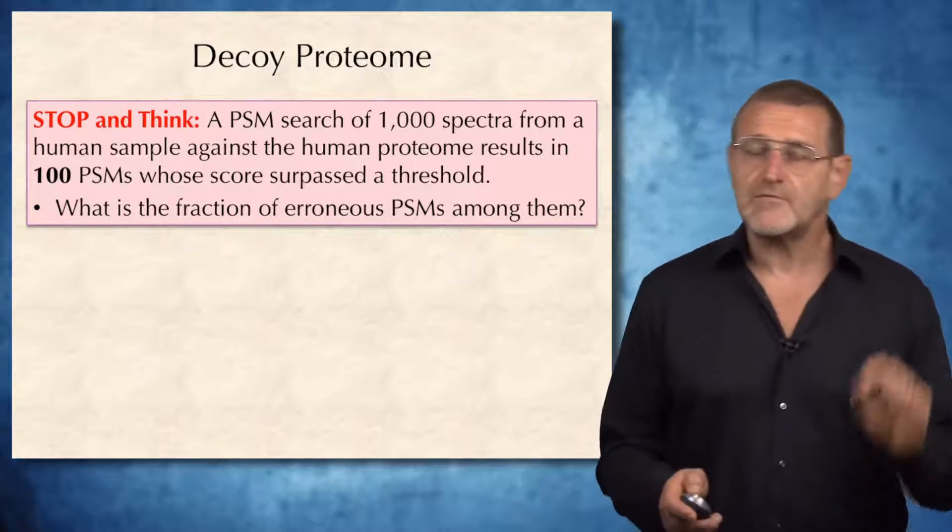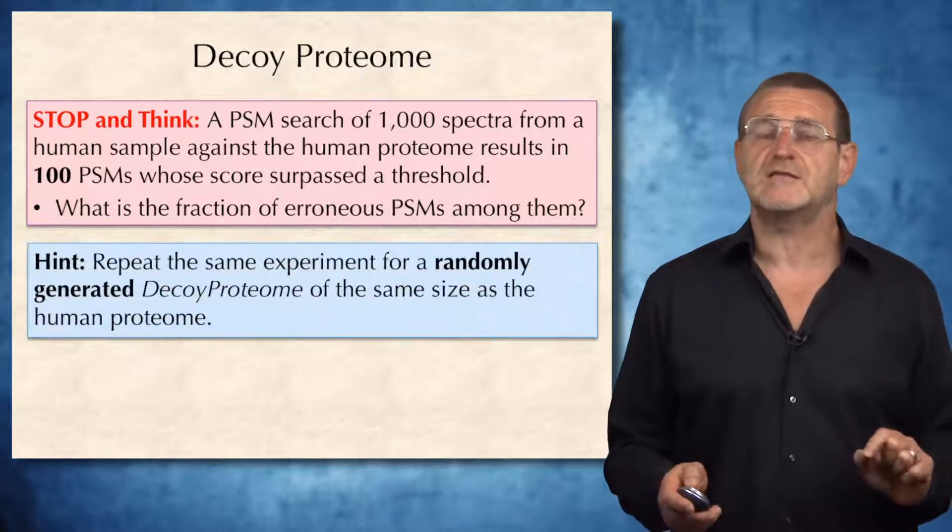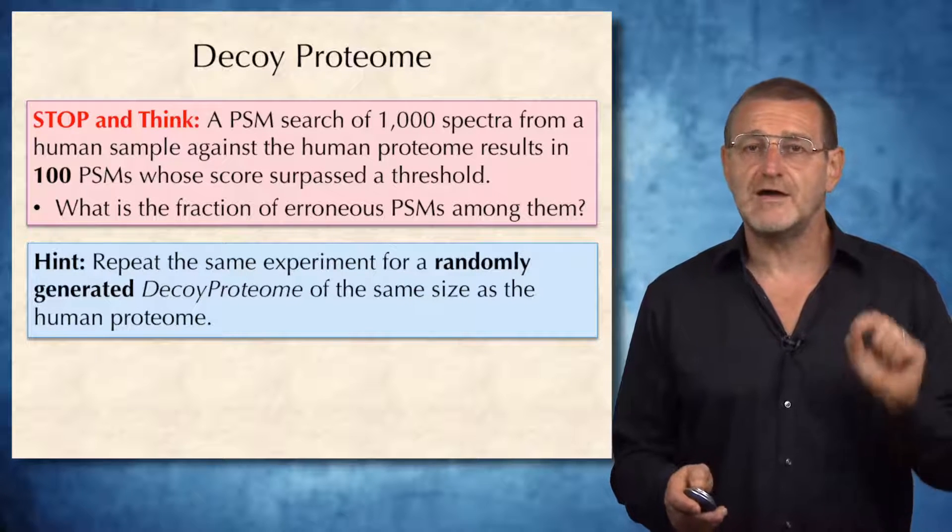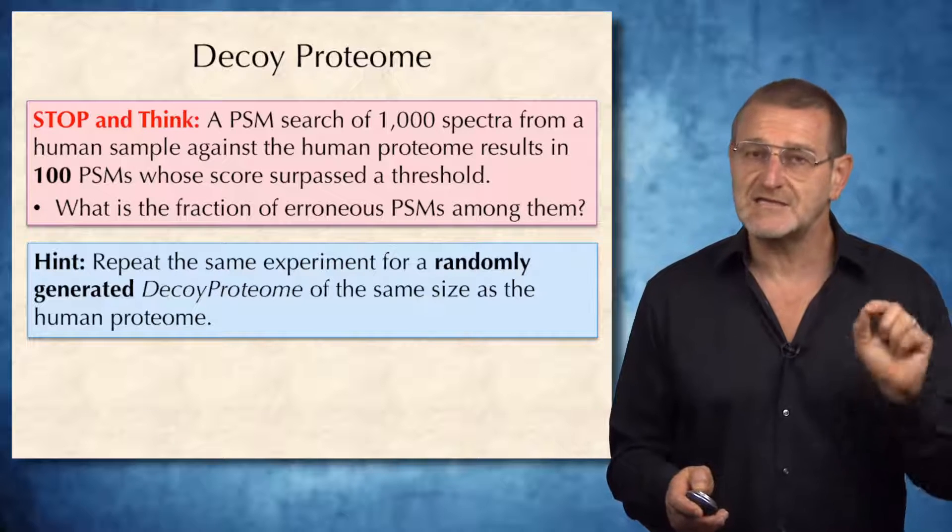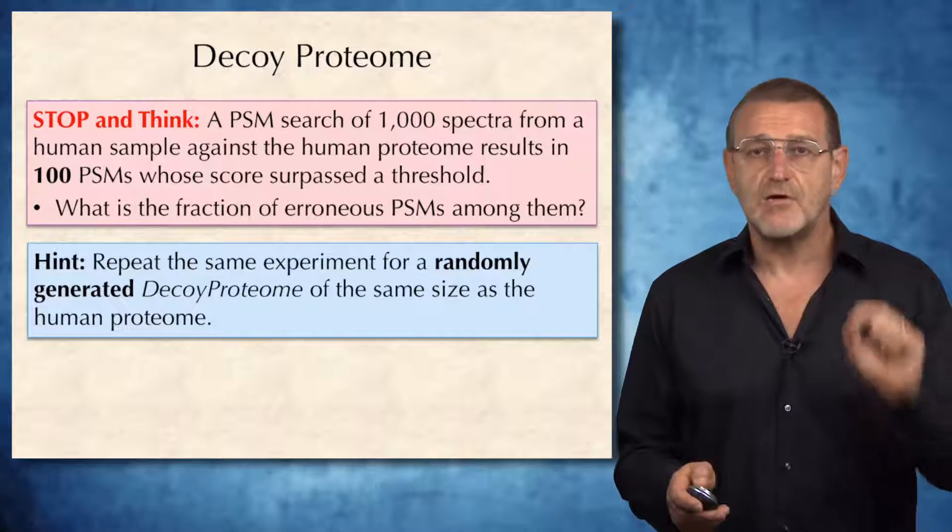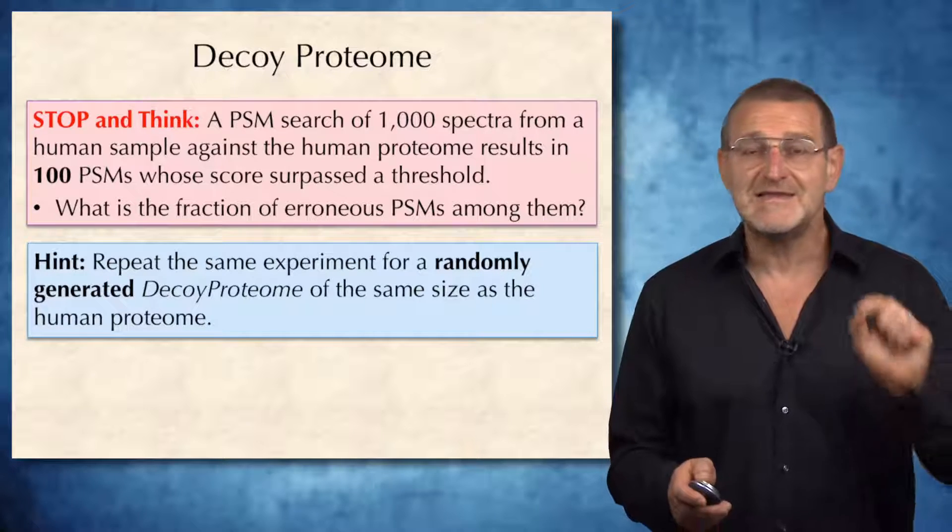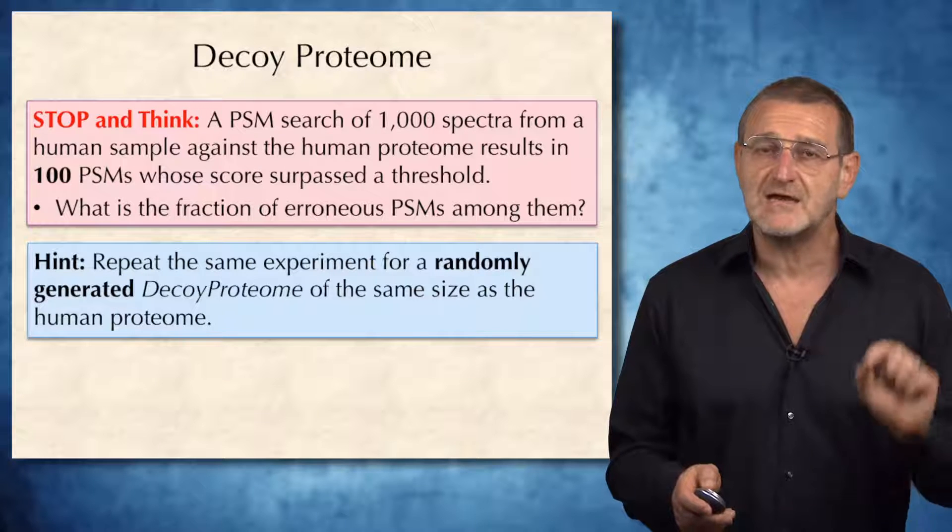I'll give you a hint of how it may be possible to answer this question. Let's repeat the same experiment for a randomly generated decoy proteome of the same size as the human proteome. Of course, we don't care about peptide spectrum matches identified in the decoy proteome. They are simply statistical artifacts.